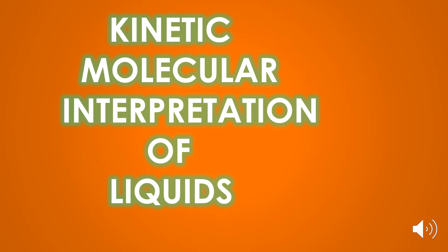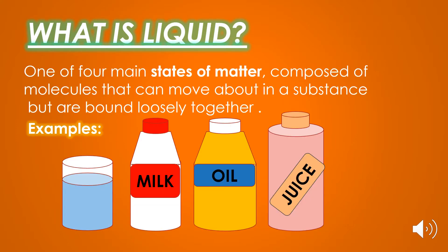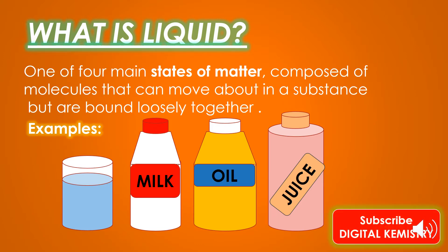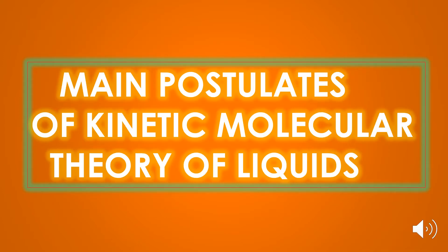Hello friends, welcome to my channel Digital Chemistry. Today's topic is kinetic molecular interpretation of liquids. What is liquid? Liquid is one of the four main states of matter, composed of molecules that can move about in a substance but are loosely bound together. Examples of liquids are water, milk, oil, and juice.